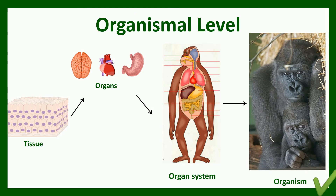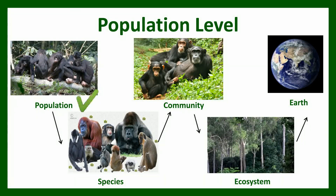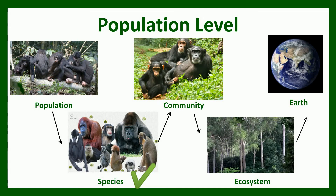The next level is the population level. A population is a group of individual organisms of the same species living in the same place. All populations of a particular kind of organism together form a species, which are similar in appearance and are able to interbreed.